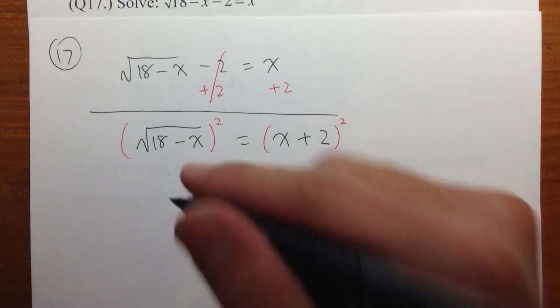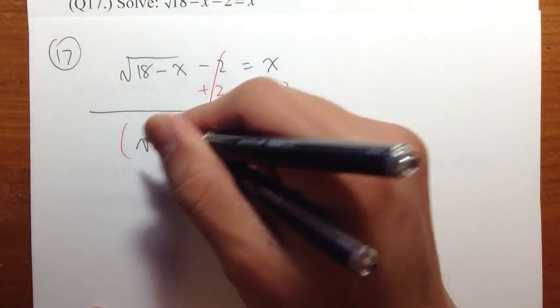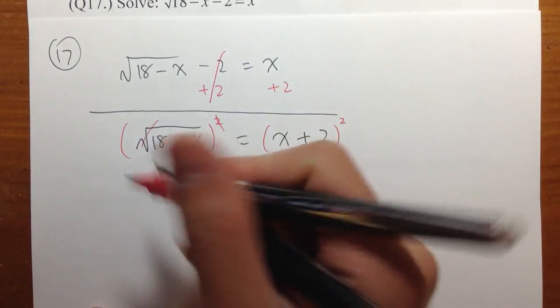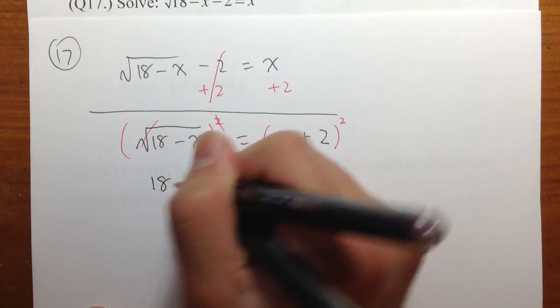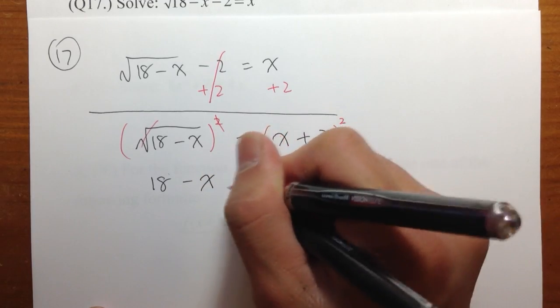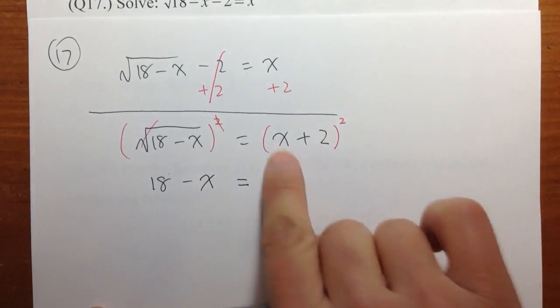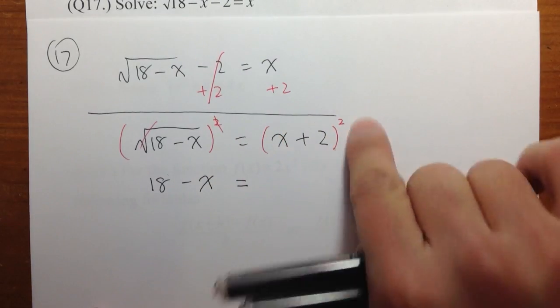The nice thing about square root and square is that they cancel each other out. So on the left-hand side, you get 18 minus x. That's equal to this side: x plus 2, squared.